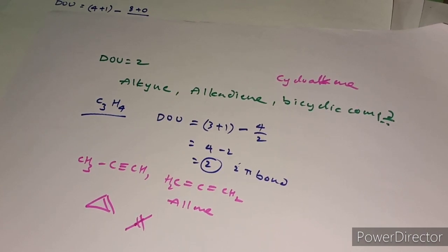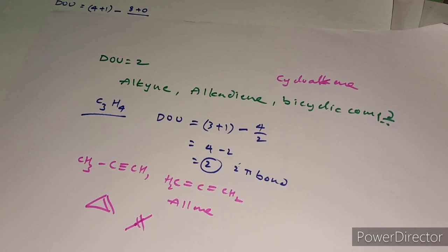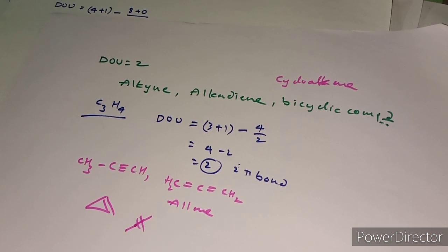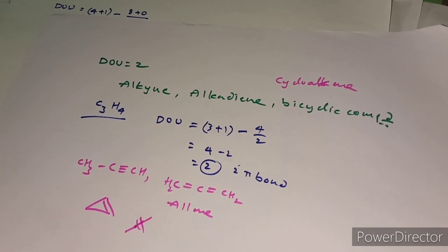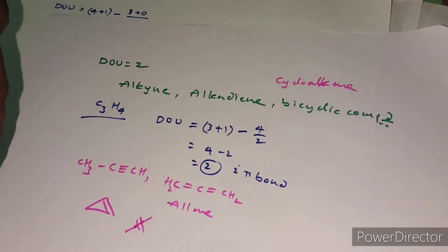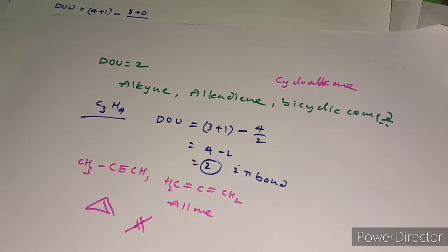To summarize the applications of degree of unsaturation: first, we can identify whether a molecule can be an organic molecule — if DOU is a whole number it can exist, if it is a fraction it cannot. Second, based on DOU we can identify the number of isomers: DOU = 1 means alkene or cycloalkane; DOU = 2 means alkyne, alkadiene, cycloalkene, or bicyclic compound (requiring minimum 4 carbons).